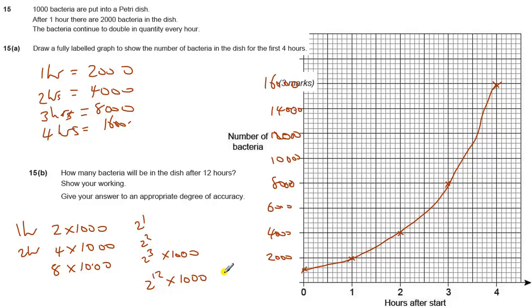Now, 2 to the power of 12 is 4096, times 1000 gives us 4,096,000. It asks for an appropriate degree of accuracy, which is usually three significant figures. So we could write 4,100,000 or 4,000,000 as suitable degrees of accuracy.